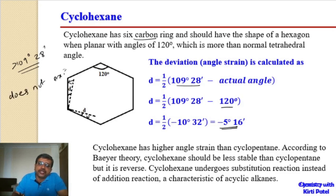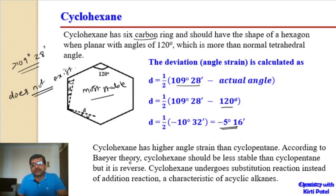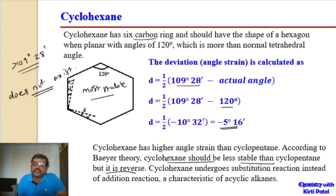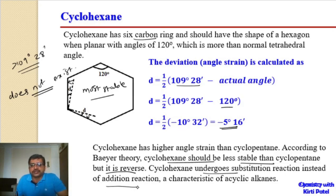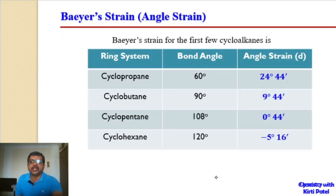In actual practice, however, cyclohexane is the most stable cycloalkane — more stable than cyclopentane. Cyclohexane undergoes substitution reactions, which are characteristic of acyclic alkanes, and does not undergo the addition reactions seen with cyclopropane or cyclobutane. So cyclohexane is as stable as acyclic alkanes, which directly contradicts Baeyer's prediction.